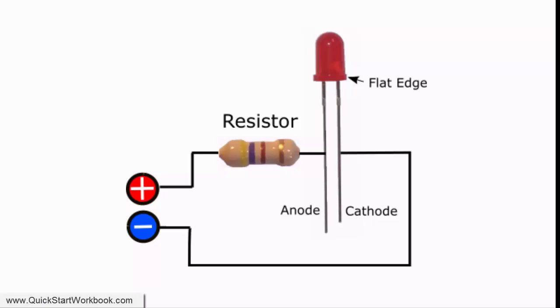If you look at this circuit, you can see that the LED has two pins, one of which is slightly longer than the other. The longer pin is the anode and has to be connected to the positive side of the circuit. The shorter pin is the cathode and has to be connected to the negative side of the circuit.